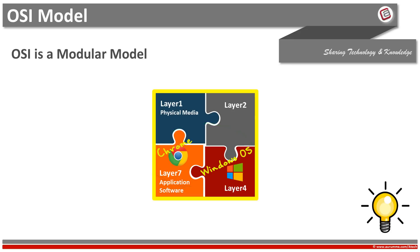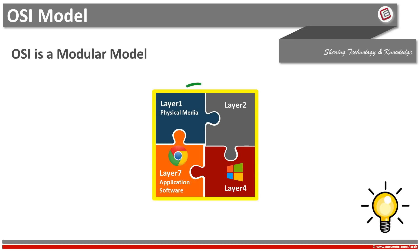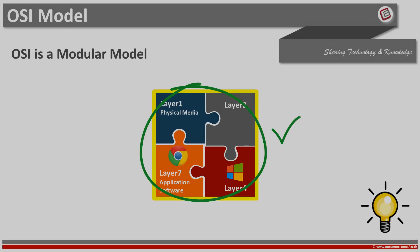Without OSI, Google would have built Chrome following its own standards while Microsoft would have built Windows on its own standards. Both of these proprietary standards would never work together if they were non-standardized under OSI. So OSI's modular model helps us to build and integrate systems.